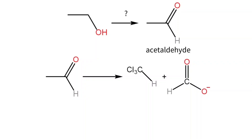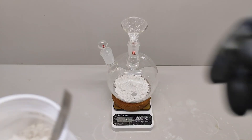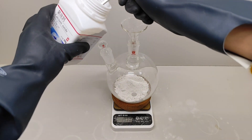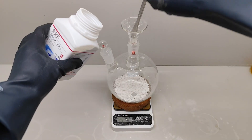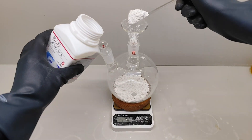The next problem is how to turn ethanol into acetaldehyde. The cheapest and easiest way is to dehydrogenate ethanol with a copper catalyst. To begin, I have to prepare some anhydrous alcohol, because the water in 95% ethanol would react with the copper catalyst and make it unusable.